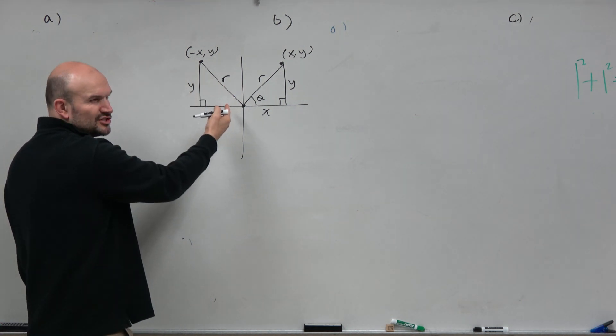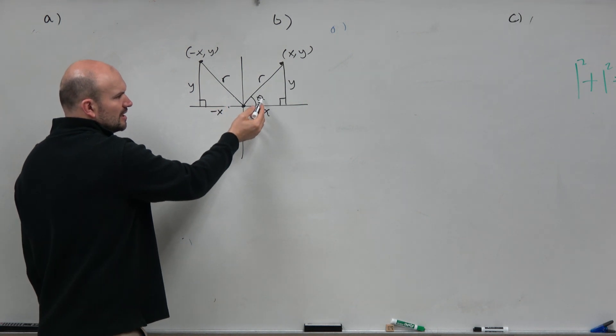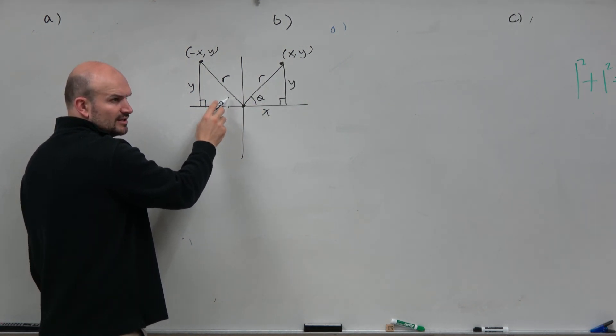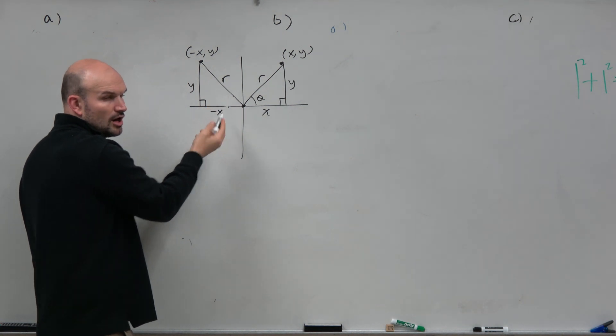Now, I wrote theta in there, but actually, I shouldn't have. Because are we sure that those are the same? Because should we use alpha? Because they could be different, right? They're in different quadrants. Or are they the same?